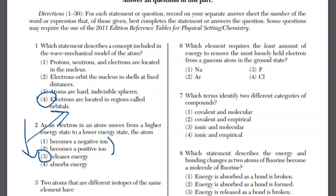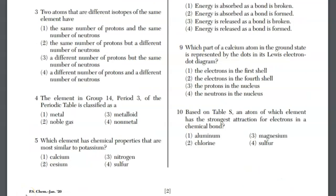Moving on to number three. Two atoms that are different isotopes of the same element. We're dealing with a vocabulary word here: isotope. You have the same element, the same atom, so the same number of protons, different number of neutrons. That crosses off three and four, but different number of neutrons, which makes it choice two.